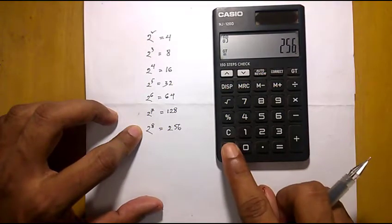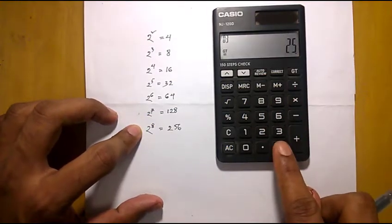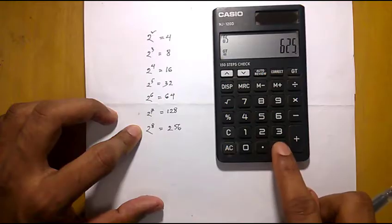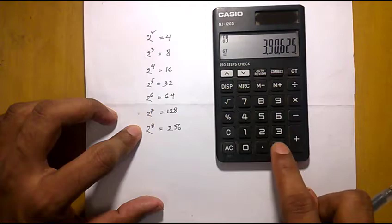For example, 5. This is 5 square, 5 cube, 5 to the power 4, 5 to the power 5, 5 to the power 6, 5 to the power 7, 5 to the power 8.